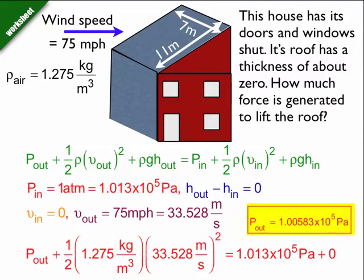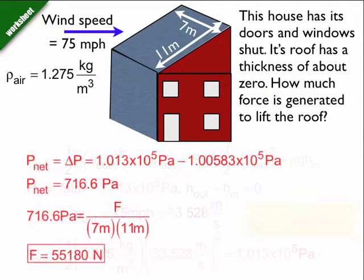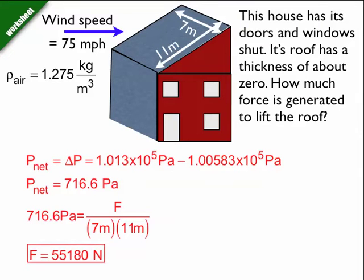So when I solve that, I find out that the pressure outside the house is 1.00583 times 10 to the 5 pascals. Now I can use this difference of pressure to calculate the force that's used to accelerate the roof off the house. So when I look at this, the net pressure, or the change in pressure,